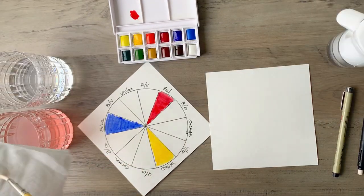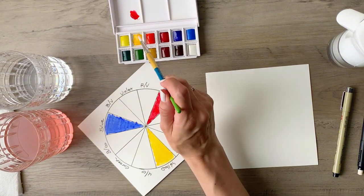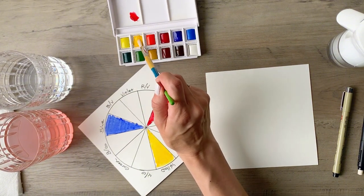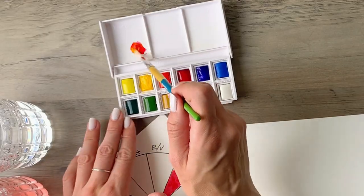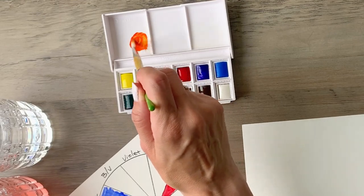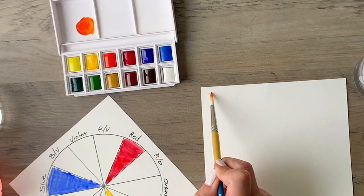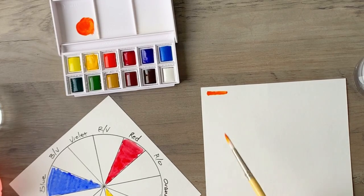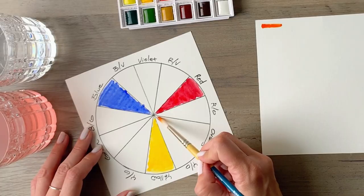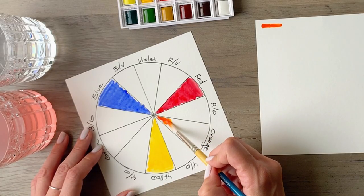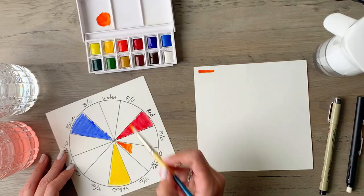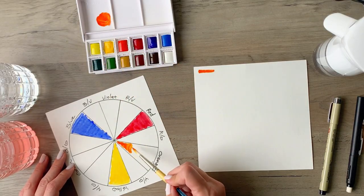Clean your brush off because we don't want that red muddying up our yellow in the pan and dip some of that yellow onto your brush and then swirl it around with the red until it's completely mixed. You can use that second piece of paper as a swatch card to make sure that you've got the color the way that you want it before you put it onto your actual color wheel.